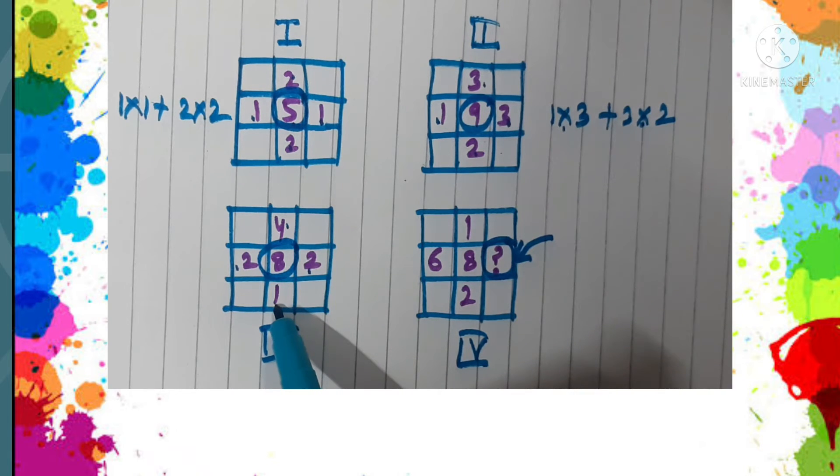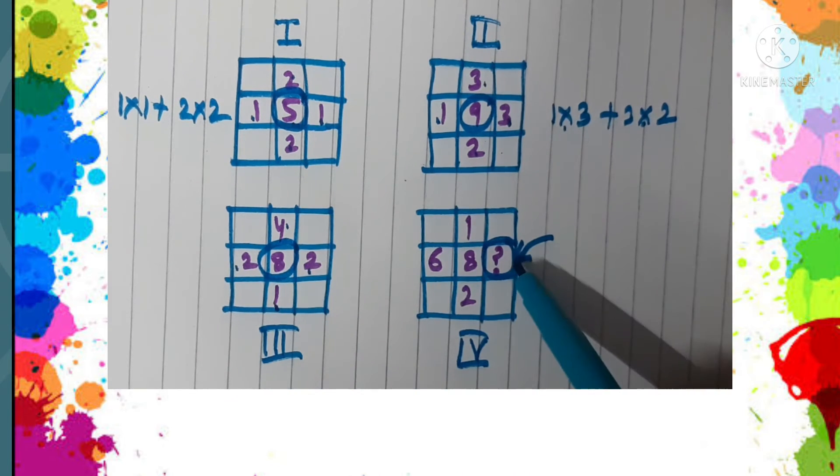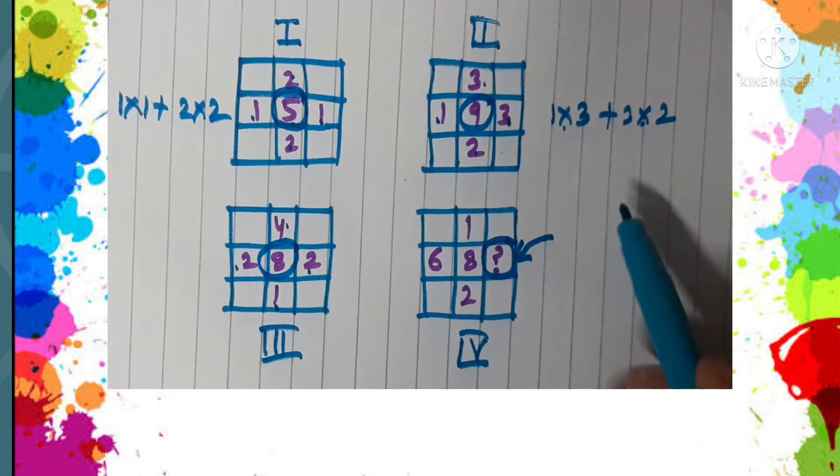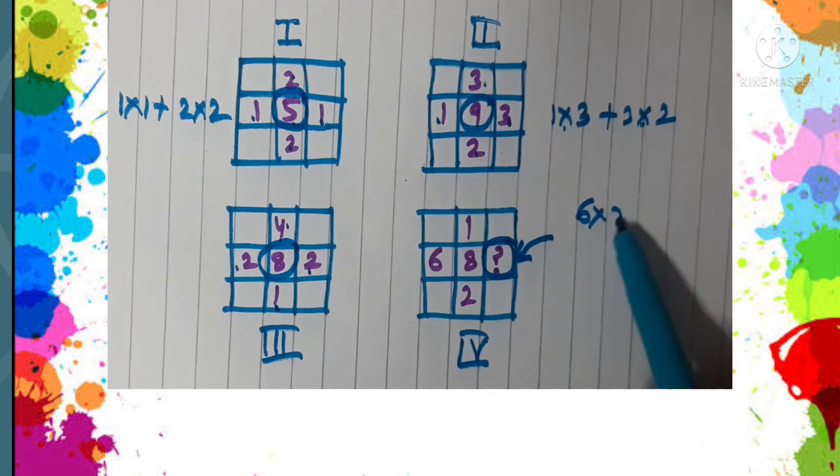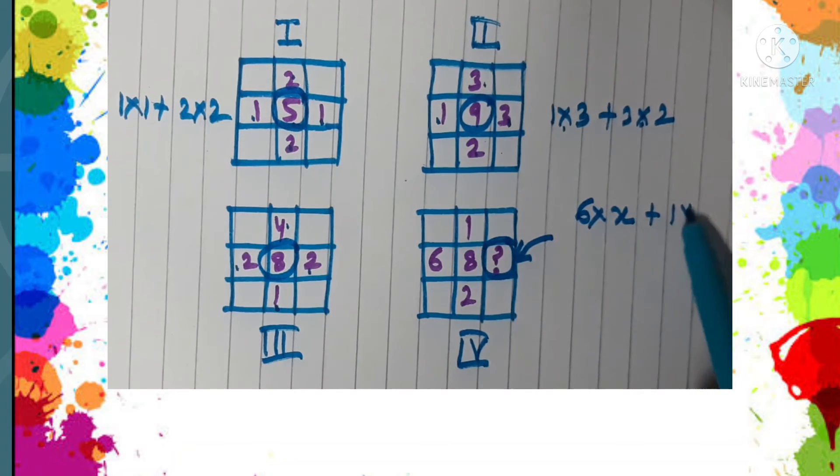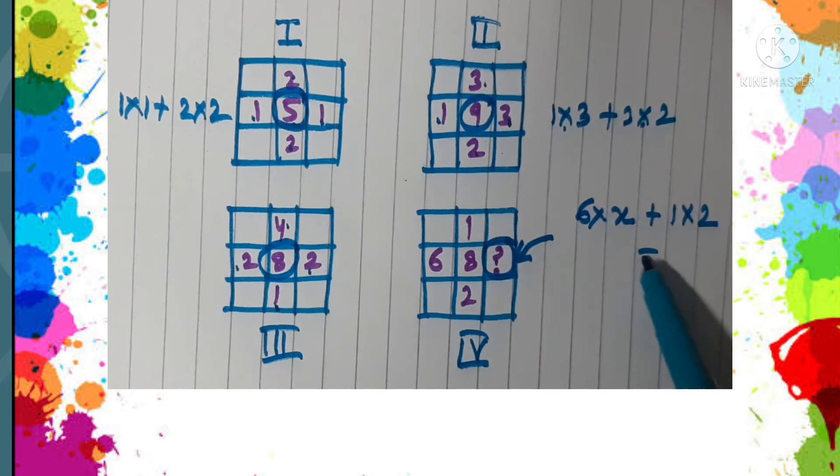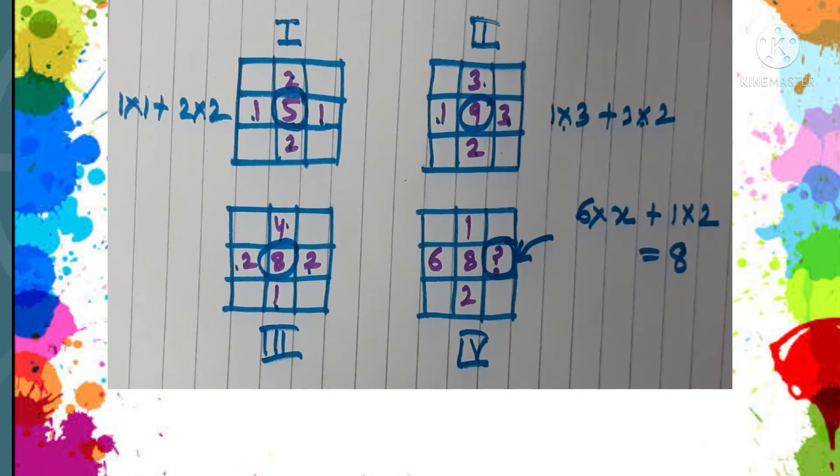So you can guess now what number will come here in the place of question mark. We need to find out: six into X plus one into two gives us eight. Yes, you are right.